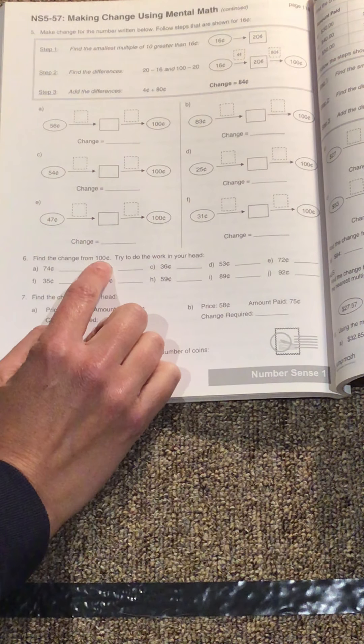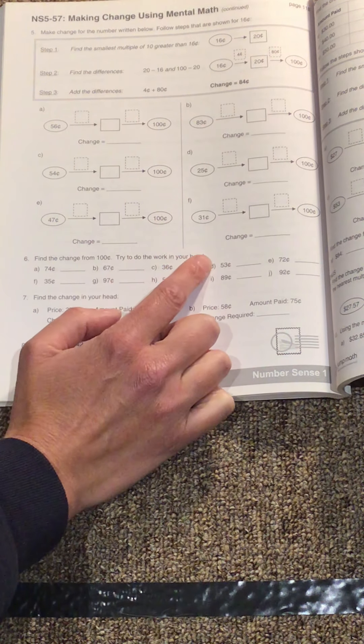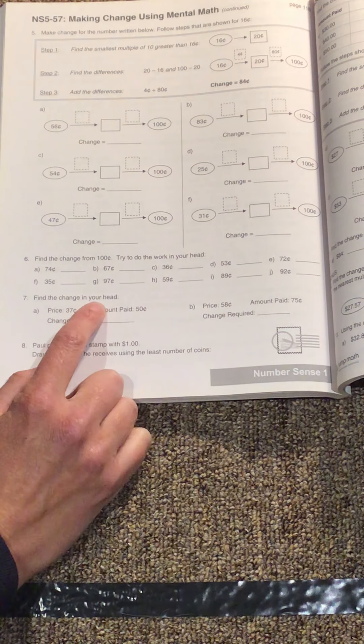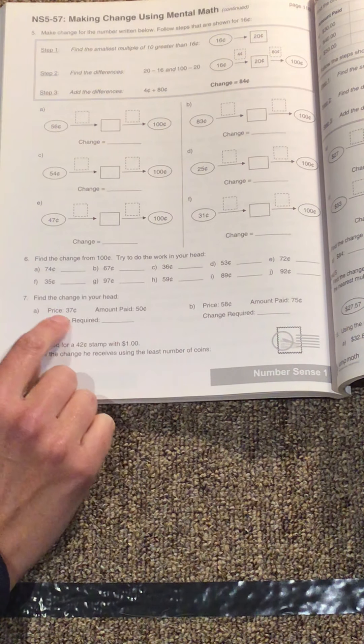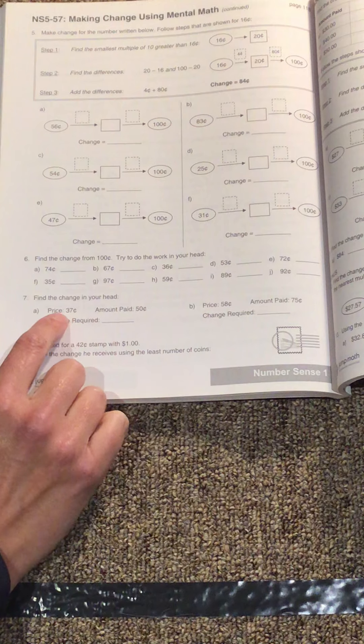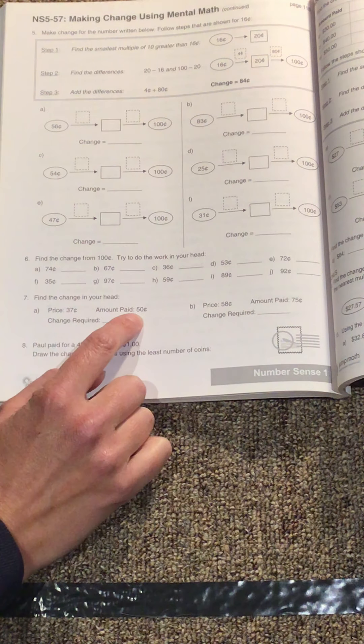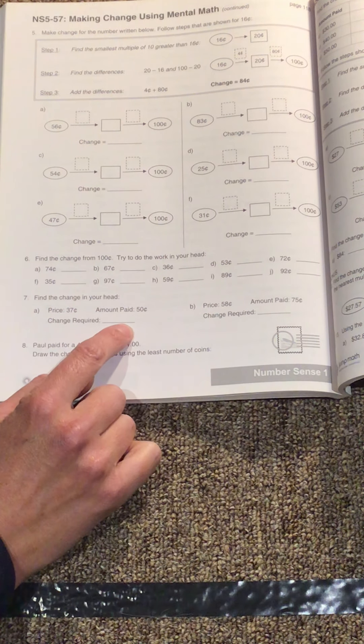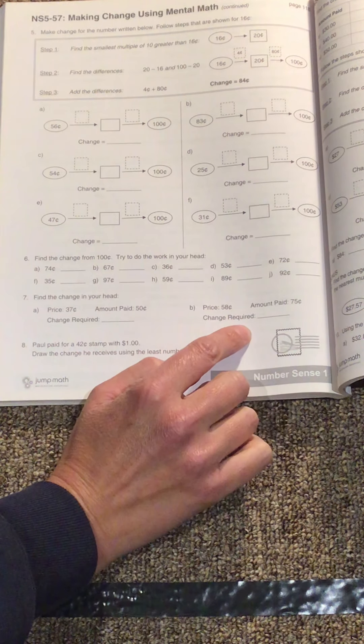Find the change from 100 cents. Try to do the work in your head. Find the change in your head. So they paid this much - sorry, no, the price was this much, amount paid that much, write the change on the line. Price, amount, change required.